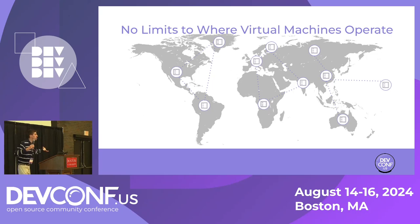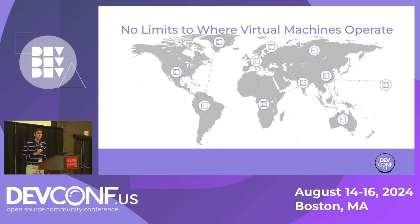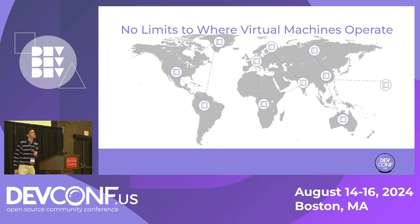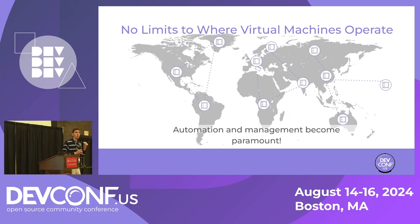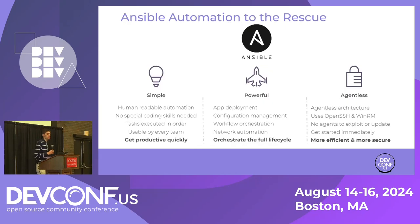Virtual machines run everywhere — in different data centers across the world. You can deploy in US East 1 in Virginia, over in APAC in Singapore, wherever you want. But how on earth do you manage all that? How can you ensure they run in the same configuration and are managed effectively? That's where you need an automation tool, and that's where Ansible Automation comes to the rescue.